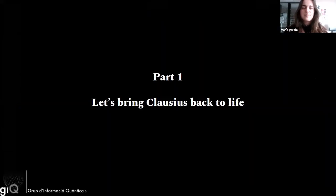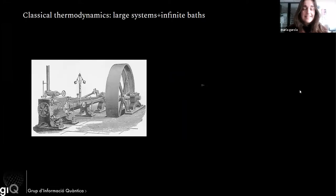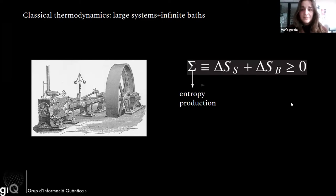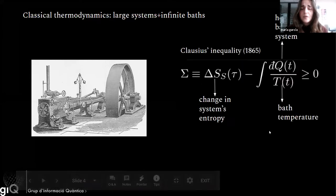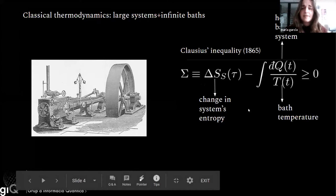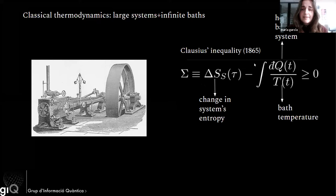Let us briefly explain why we want to bring Clausius back to life. In classical thermodynamics, normally what you consider is a large system that is in contact with an infinite bath. As George, among other speakers, explained this morning, it is possible to write down the second law for this kind of system-bath setup. The total entropy production of the universe must be positive. There is another way of writing this down using the Clausius inequality that he derived back in 1865, where we write the difference in the entropy of the bath in this integral form.